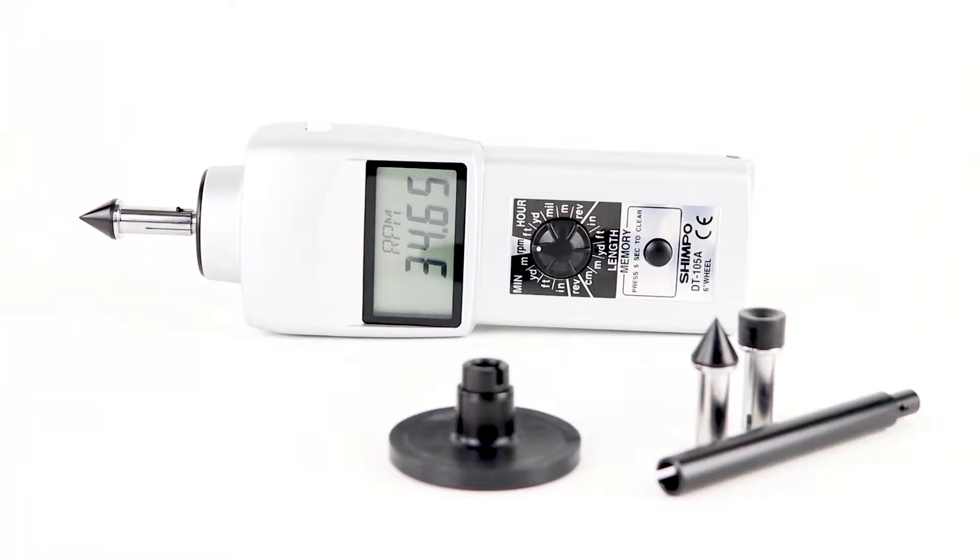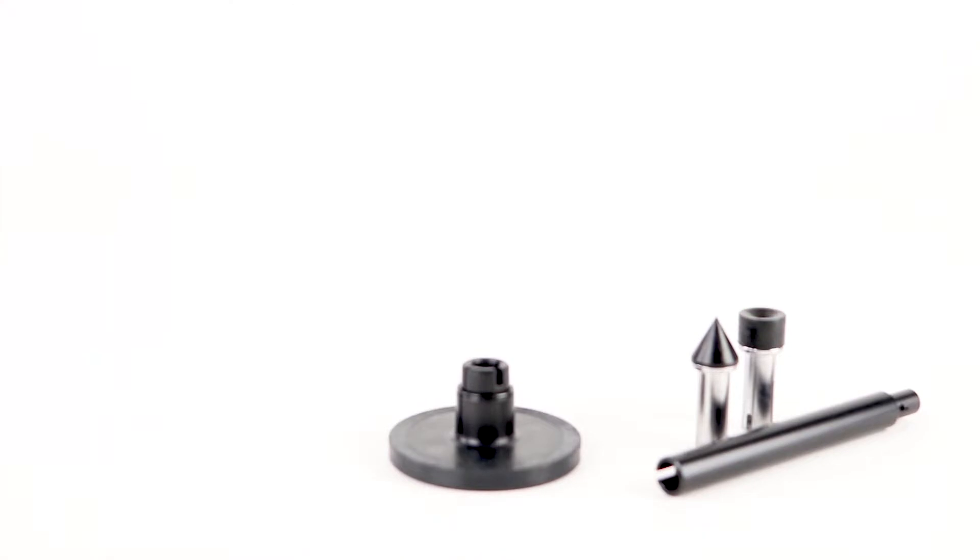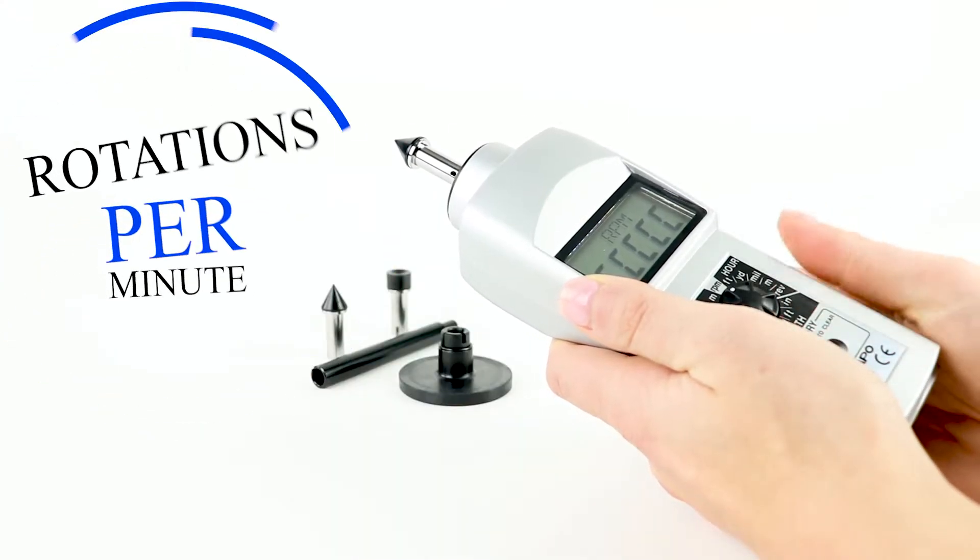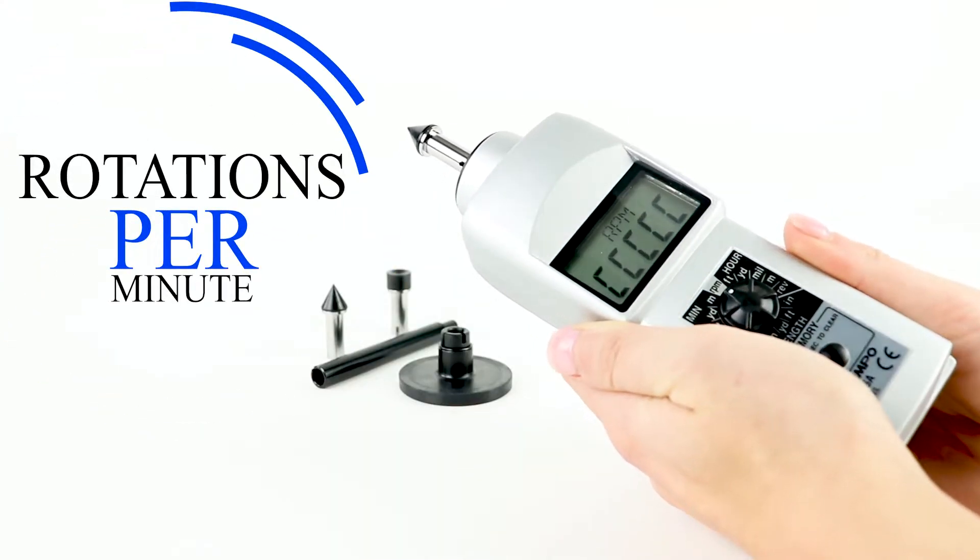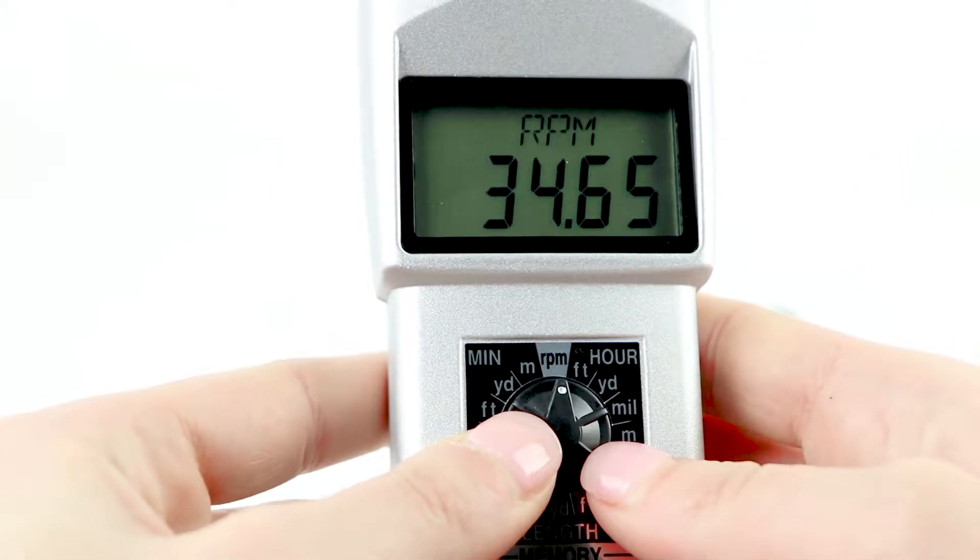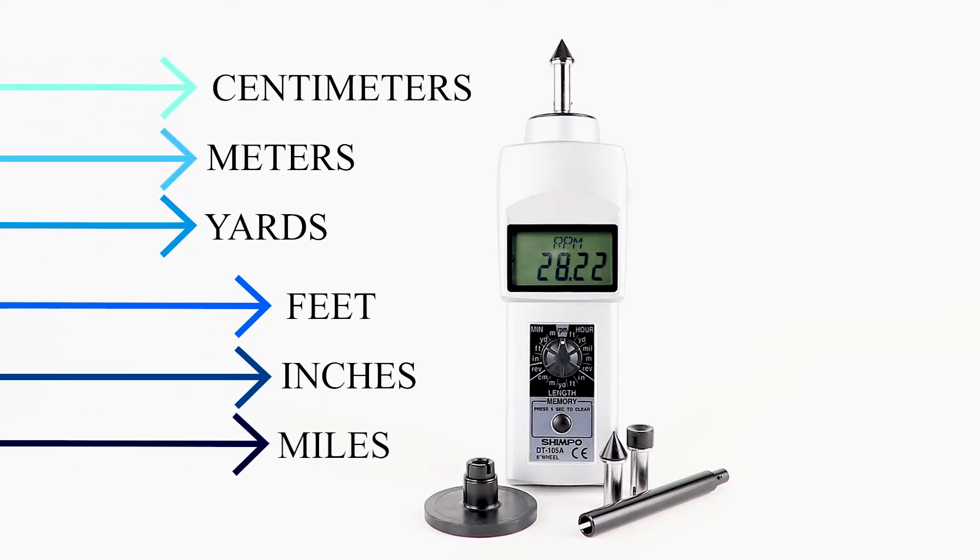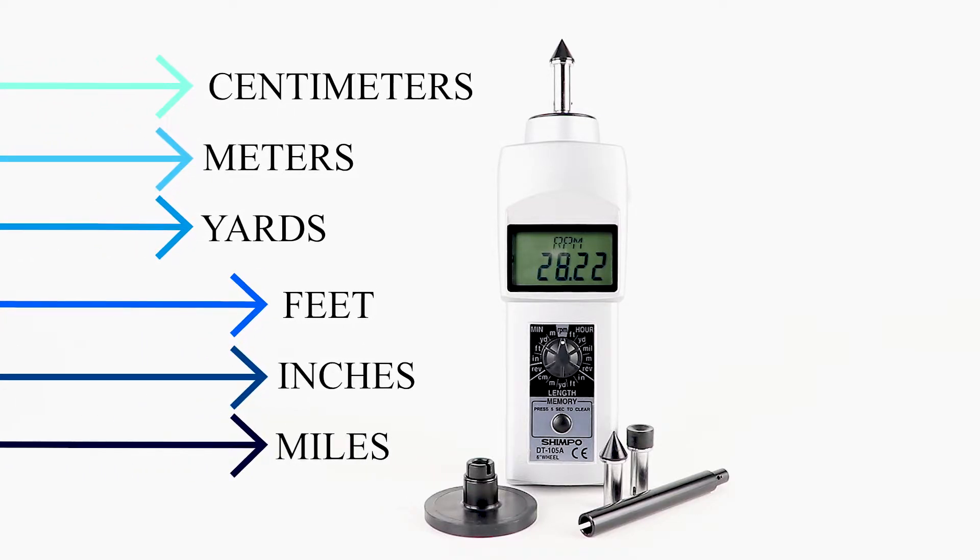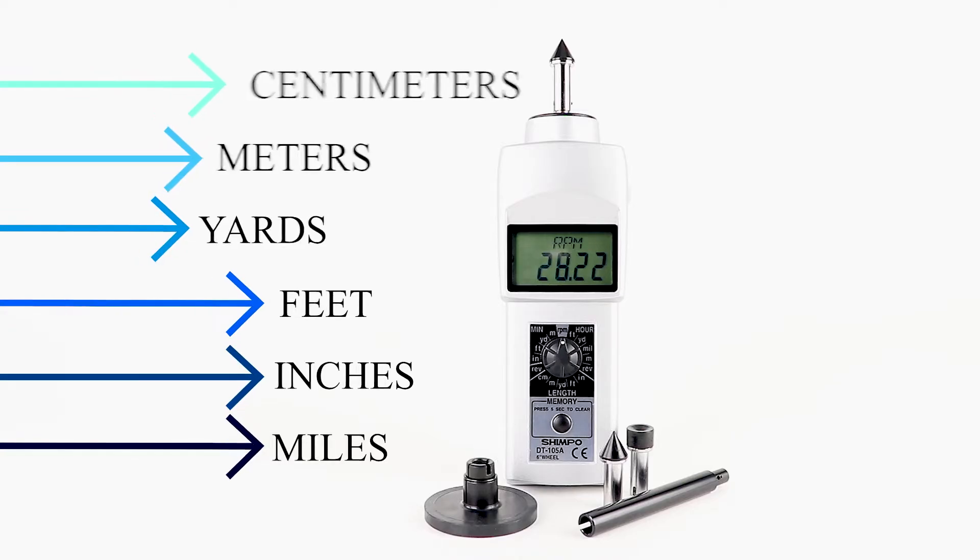When displaying rotational speed, it is displayed in rotations per minute, while the surface speed and length measurements can be displayed in a variety of user-selectable engineering units, including centimeters, meters, yards, feet, inches, and miles.